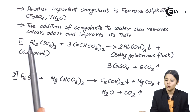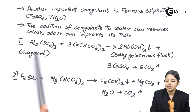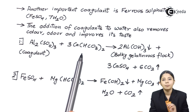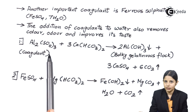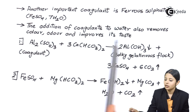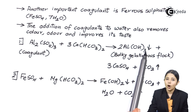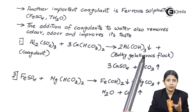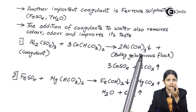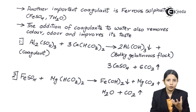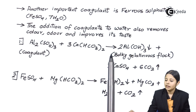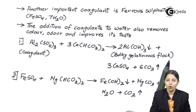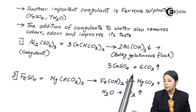Let us see the reactions that take place. In the first reaction, Al2(SO4)3 is used as the coagulant, and 3Ca(HCO3)2 represents the colloidal particles present in the water. When both mix together, the products are 2Al(OH)3 as a precipitate — indicated by a downward arrow — plus 3CaSO4 plus 6CO2.